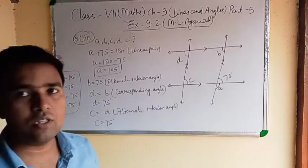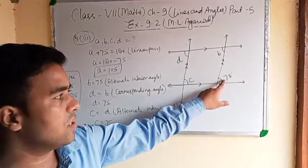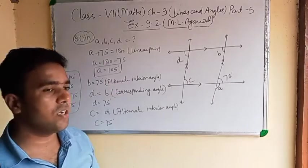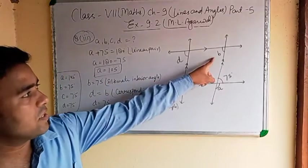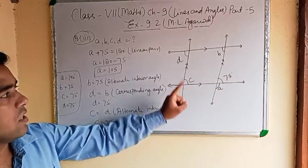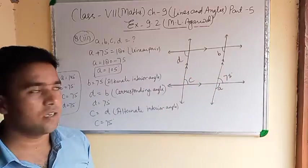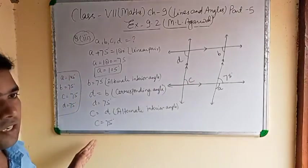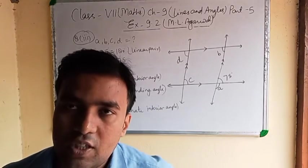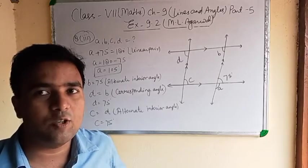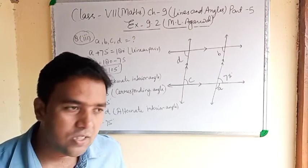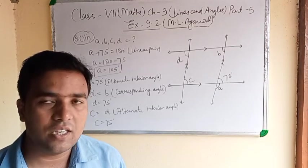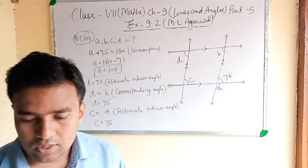Let me review: a plus 75 equals 180 by linear pair, so a equals 105. b equals 75 by alternate interior angle. d equals b by corresponding angle. c equals d by alternate interior angle. This chapter is now completed in this book. Thank you, students.